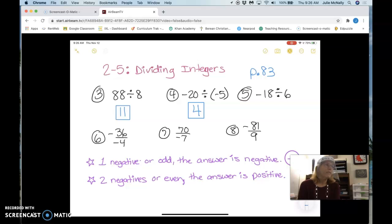Number 5. How many negatives? One. One, so the answer is negative. What is 18 divided by 6? 3. Yes, good. Are you waiting for us?